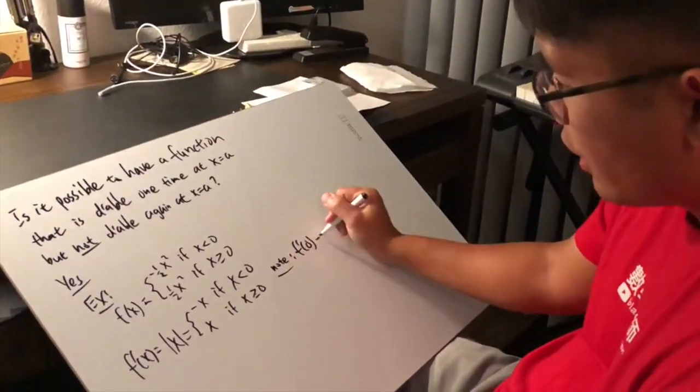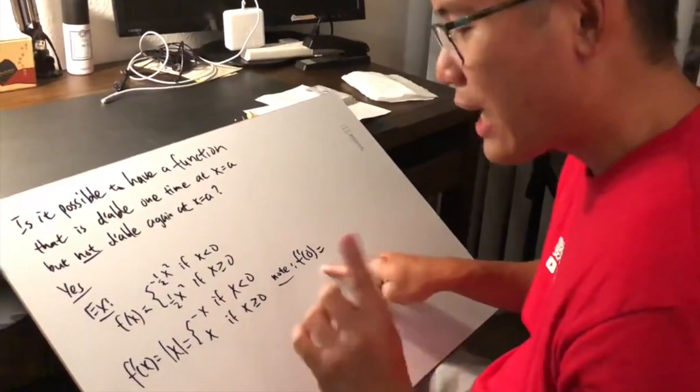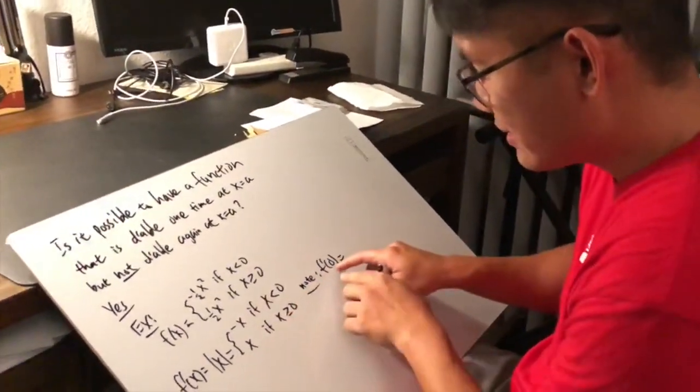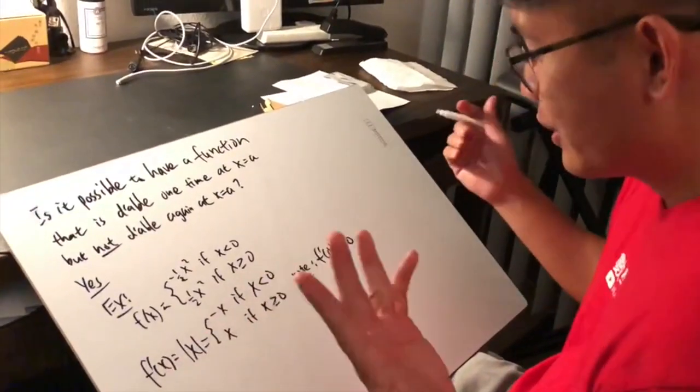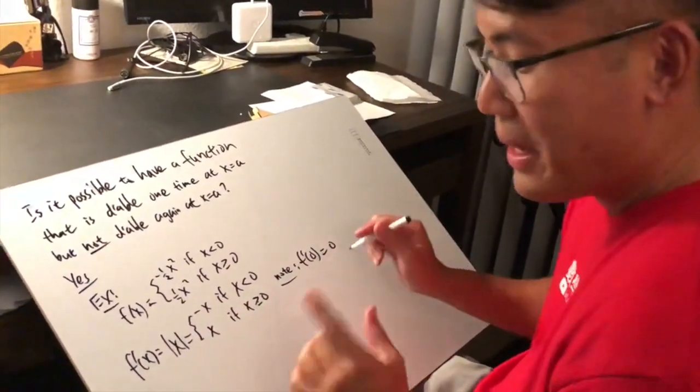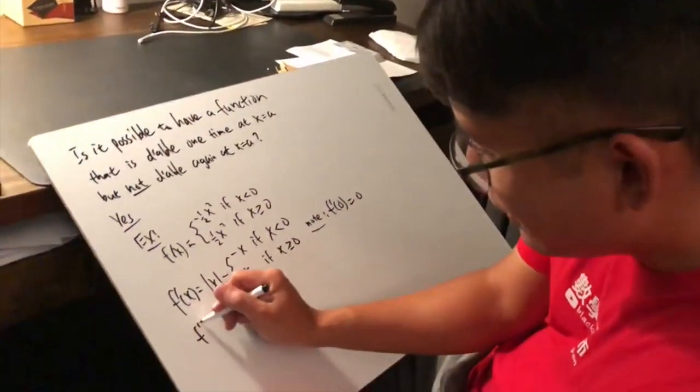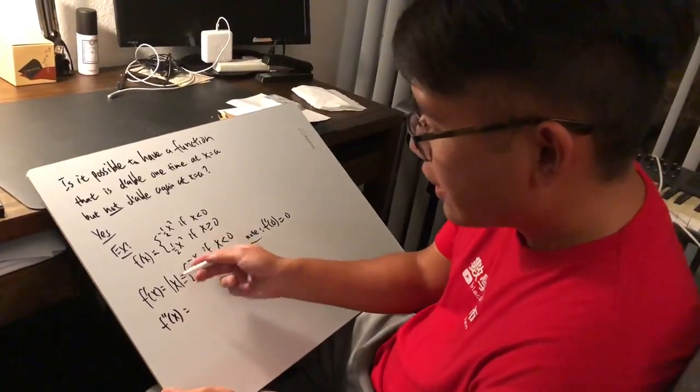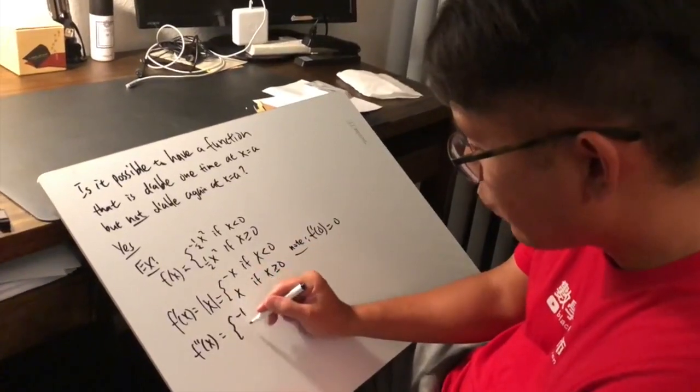f' of 0. This right here actually exists because I can plug in 0 into this, and then the answer to this is just the absolute value of 0, which is 0. But as we all know, if I differentiate this again, the derivative of absolute value, you get negative 1 and 1.